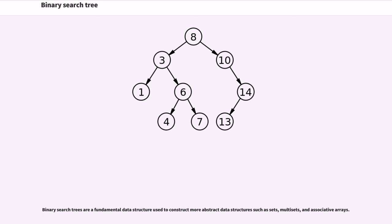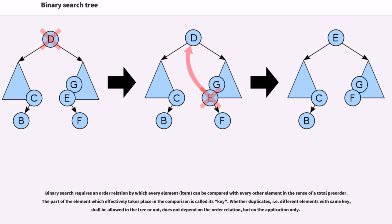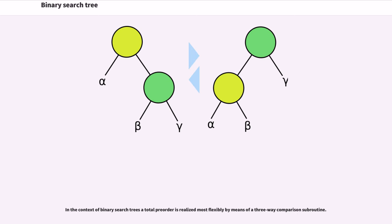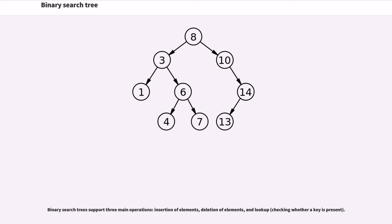Binary search trees are a fundamental data structure used to construct more abstract data structures such as sets, multi-sets, and associative arrays. Binary search requires an order relation by which every element can be compared with every other element in the sense of a total pre-order. The part of the element which effectively takes place in the comparison is called its key. Binary search trees support three main operations: insertion of elements, deletion of elements, and lookup (checking whether a key is present).